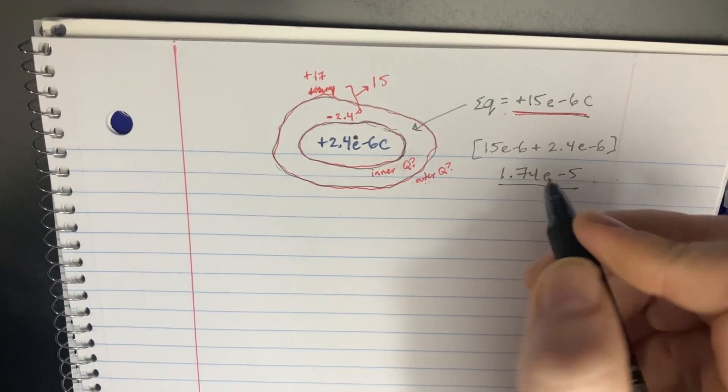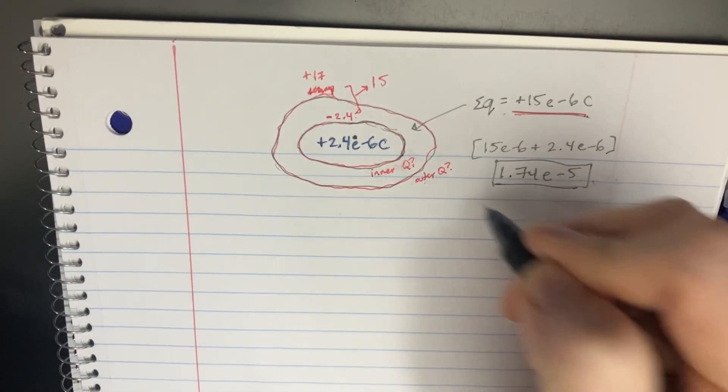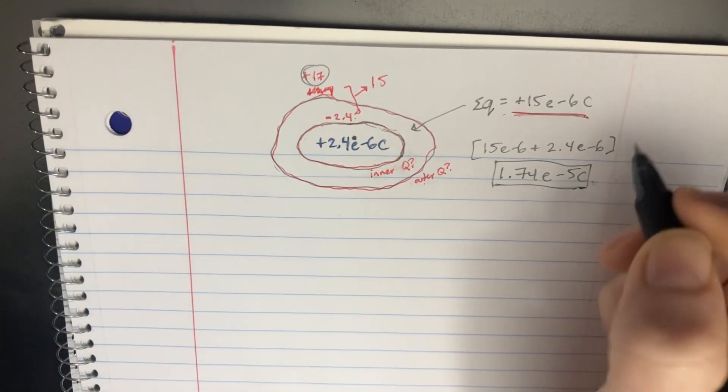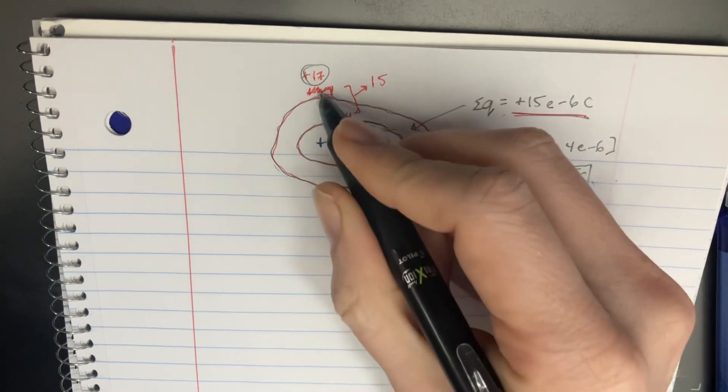And this is going to be what's on the outer edge, because that's this portion. And that's the coulombs right there. So that's going to be the charge on the outer edge.